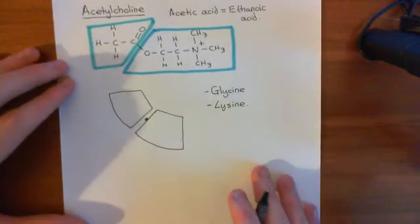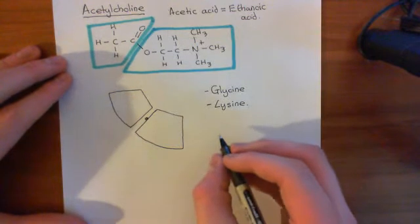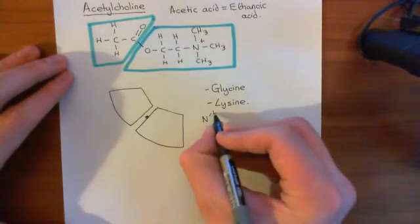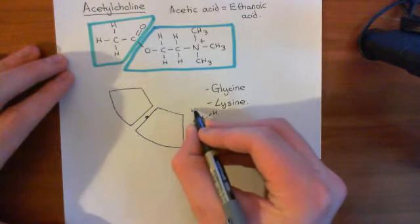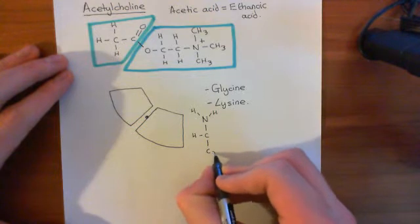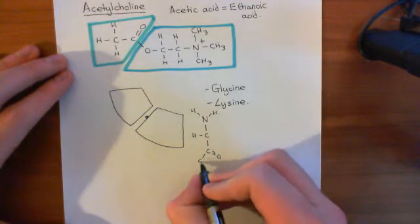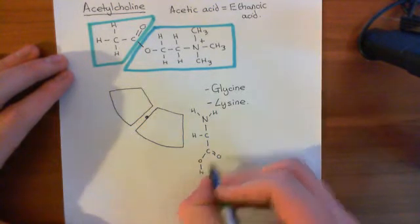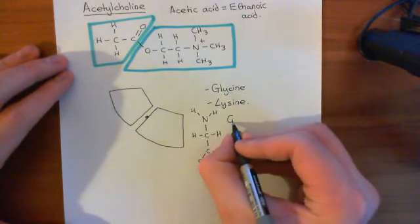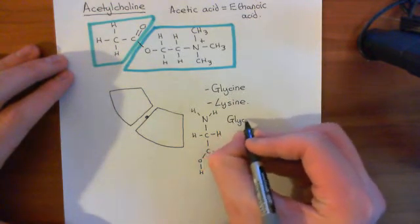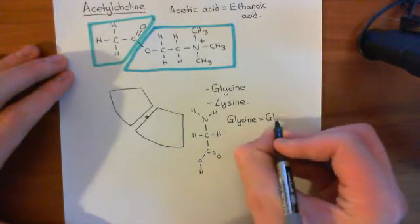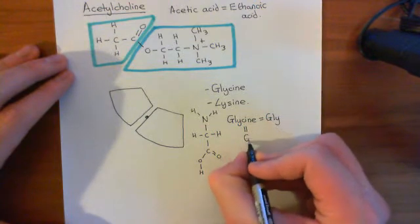Now let's look at the different structures of the amino acids glycine and lysine. We'll start with glycine. Glycine is the simplest amino acid of all of them. Here's the core amino acid structure: the amino group and the carboxylic acid group. The R group of glycine is just a hydrogen off the alpha carbon. The three-letter amino acid code for glycine is GLY, and the single-letter code is G.